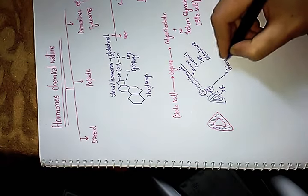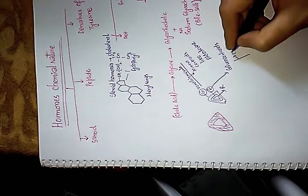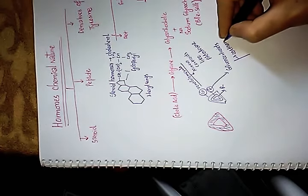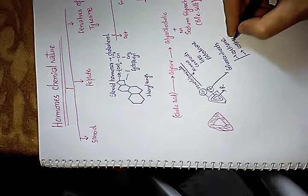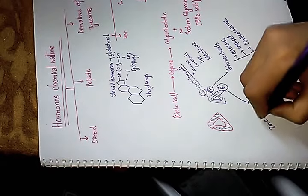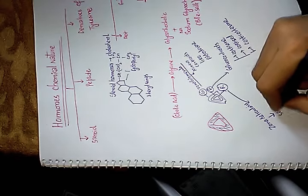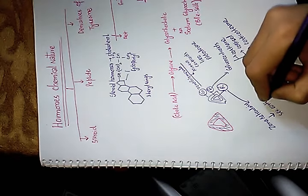Zona fasciculata secretes glucocorticoids such as cortisone, cortisol, and corticosterone. Zona reticularis secretes sex corticoids called androgens.